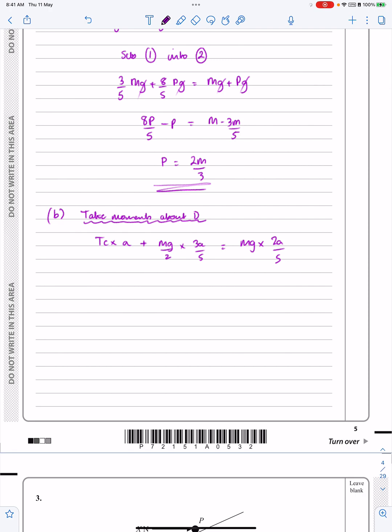And now tidying everything up on here, we've got Tc is going to be equal to, well, the A's can cancel. Take everything over to the other side, I get 2Mg over 5 minus 3Mg over 10, I get the Tc works out to be Mg over 10. Hopefully, all of that makes sense. Thank you very much.